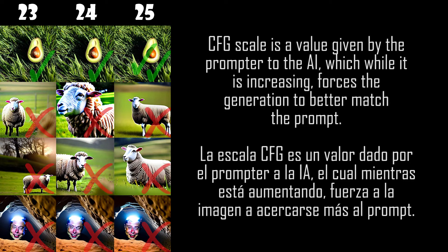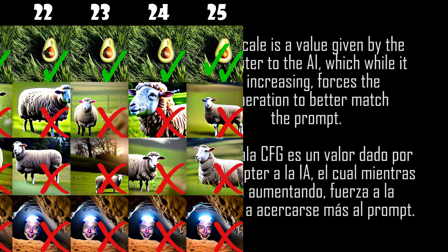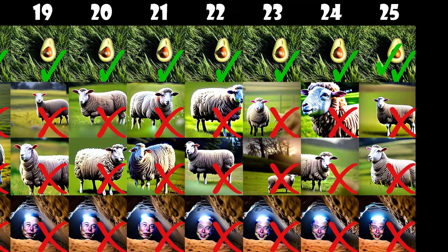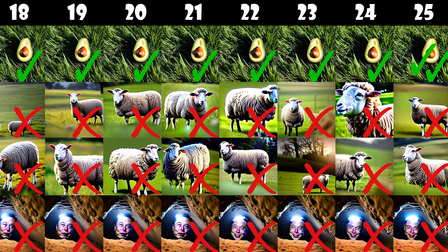Now we will watch these images again. We can see that in the case of avocados, almost every one of them looks great and in the worst case still useful. But in the case of animals like Elon Musk and the chipmunk, we can see their fur, skin, and eyes look glitchy or fake at the last high values — almost like plastic in the case of the chipmunk.